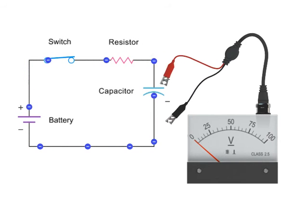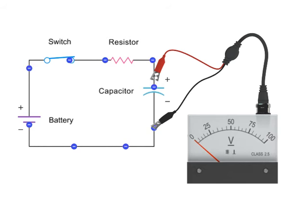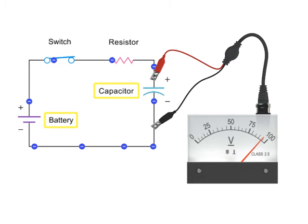Eventually, the voltage across the capacitor will equal the voltage of the source. At this point, the flow of electrons stops because the source voltage and capacitor voltage is equal but opposing each other. The capacitor is essentially charged.